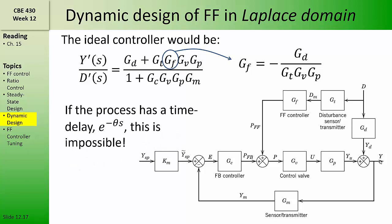Now, if the process has a time delay, this is impossible, because we would have an e to the minus theta s in the denominator in GP, and that e to the minus theta s in the denominator becomes an e to the theta s in the numerator of GF, which means that GF must act before the disturbance takes place. Based on this regulator transfer function, can you answer the question, how does the feed-forward controller GF affect the closed-loop stability of this process? This is an important question that we will return to later. You can think about it now.